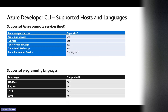Here are the hosts that are supported. As you can see, it is very heavily on the side of PaaS services. At this moment, if you have an app that uses Azure Functions, App Service, or Static Web Apps, that is something you can use. Kubernetes and AKS managed Kubernetes is on the roadmap — support is not there yet, coming soon. Supported programming languages include Node.js, Java, .NET, and Python.